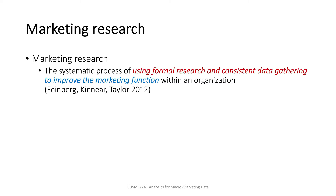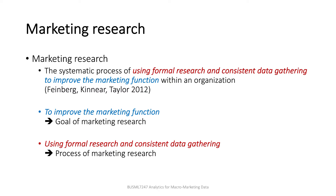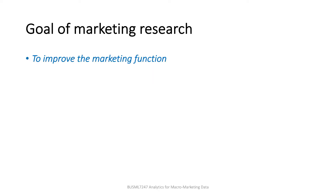In that sense, marketing research can be viewed as the systematic process of using formal research and consistent data gathering to improve the marketing function within an organization. This definition, suggested by Feinberg, Kinney, and Taylor, clearly states the goal of marketing research and how to conduct it. The goal is to improve the marketing function, meaning decision-making faced by marketing managers. The managers cannot handle all decision-making problems by themselves; they sometimes seek evidence to justify their decisions through marketing research.